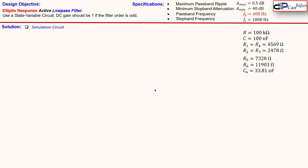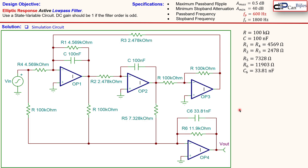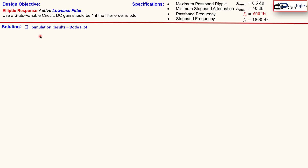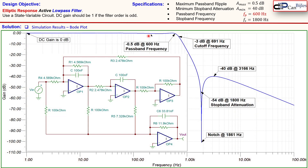Moving to simulation results, the selected and calculated component values are summarized. The circuit has been drawn in the SPICE simulator with all resistors R1, R2, R4, capacitors, and four op-amps shown. Looking at the Bode plot — the gain plot in blue — we verify the DC gain is indeed 0 dB.